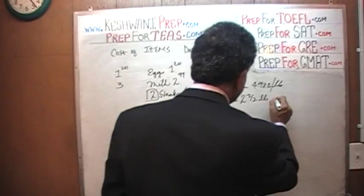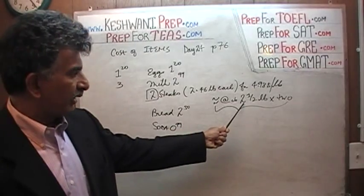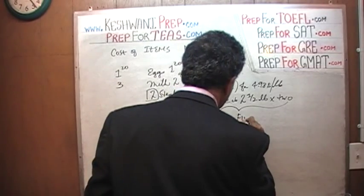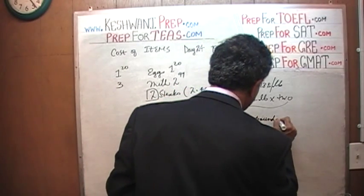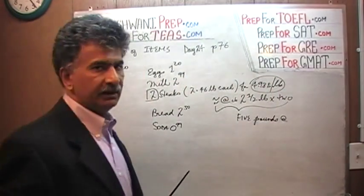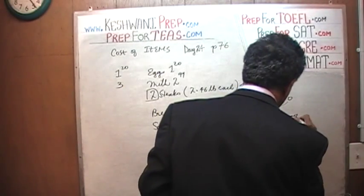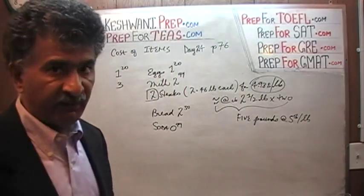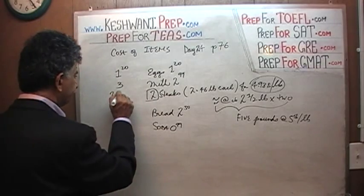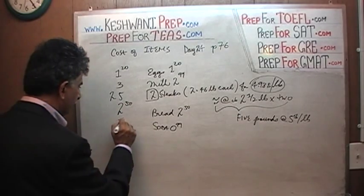We are buying two of them. If you are buying two steaks and each is 2.46 pounds, which we are approximating as 2.5 pounds, and you are buying two of them, that's 5 pounds. Five pounds at $4.98 per pound — I'm going to pretend it's $5 per pound. So we are basically buying five pounds of meat at $5 per pound. That's $25. The bread is $2.50, and the soda is $0.99, which we round to $1.00.